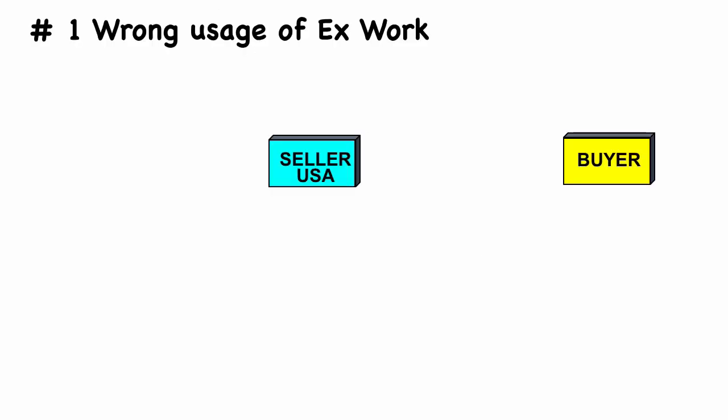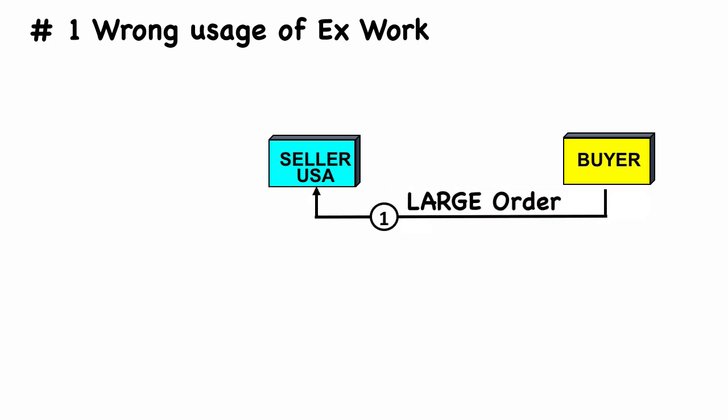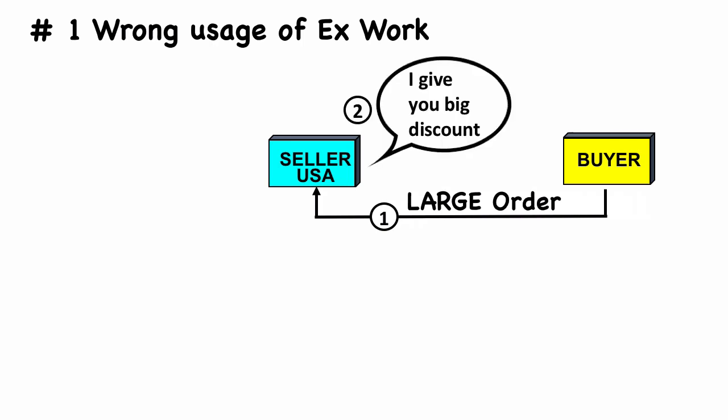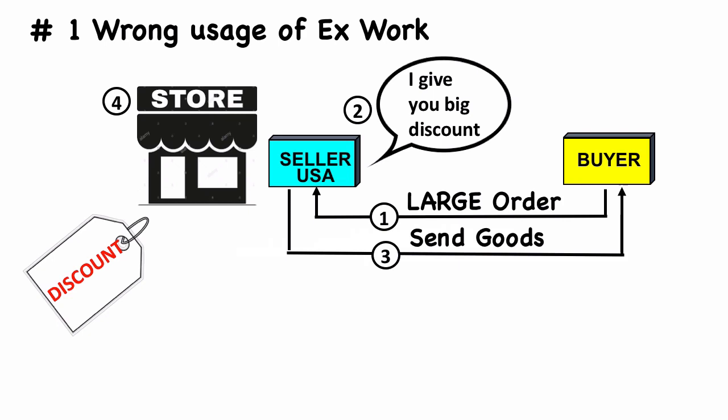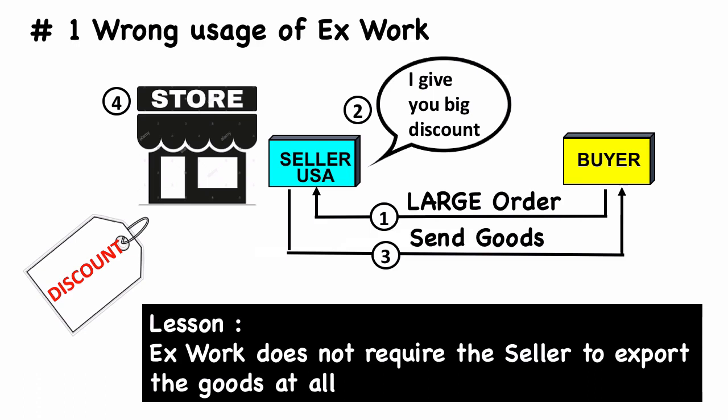The first example is wrong usage of EXW. Exporters like to use the Incoterm EXW because they think it is the easiest for them. One company in the US received a large order from an overseas buyer. Since the seller was eager to accept this large order, the seller offered a big discount on the EXW price, and the buyer quickly agreed. However, the seller found out that the buyer had been selling his goods at a discounted price in a chain of US retail stores, and this was sabotaging the seller's own sales. This happened because the seller did not know how the EXW term works, and that EXW does not require the seller to export the goods at all.